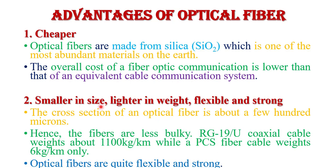The next advantage of optical fiber is that it is smaller in size, lighter in weight, flexible, and strong. The cross-section of optical fiber is about a few hundred microns, so it is smaller in size. Due to this, the fiber is less bulky and lighter in weight. For example, RG-19U coaxial cable weighs about 1,100 kg per kilometer, while plastic-clad silica fiber cable weighs only around 6 kg per kilometer. Optical fiber is also quite flexible and strong.